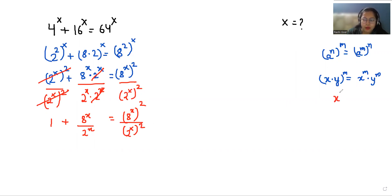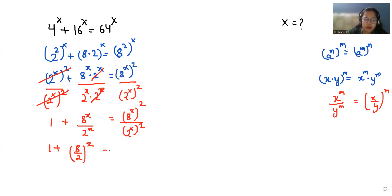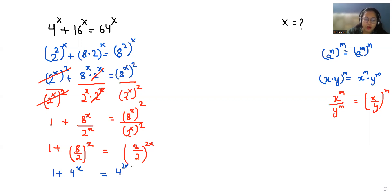So 1 plus 4^x equals 4^(2x). Now according to the exponent rule, x^m / y^m can be written as (x/y)^m. So 1 plus (8/2)^x equals (8/2)^(2x), which gives us 1 plus 4^x equals 4^(2x).